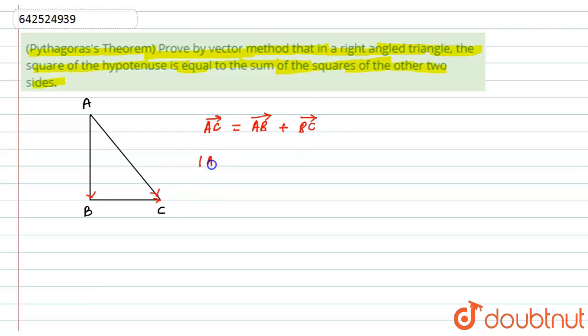So the mod of AC vector squared will be nothing but mod of AB vector squared plus mod of BC vector squared. Now as we know that mod means the magnitude of the vector, and magnitude of any vector can be written as AC vector dot AC vector.